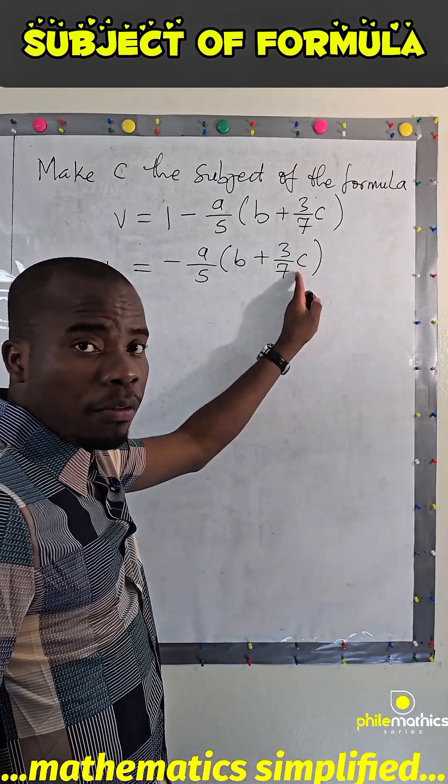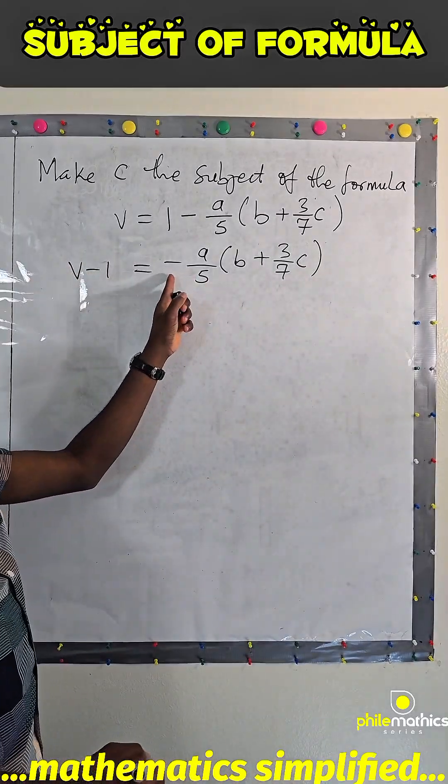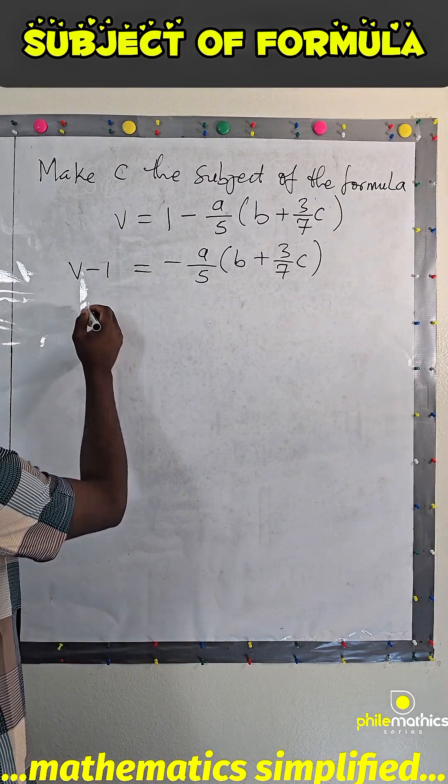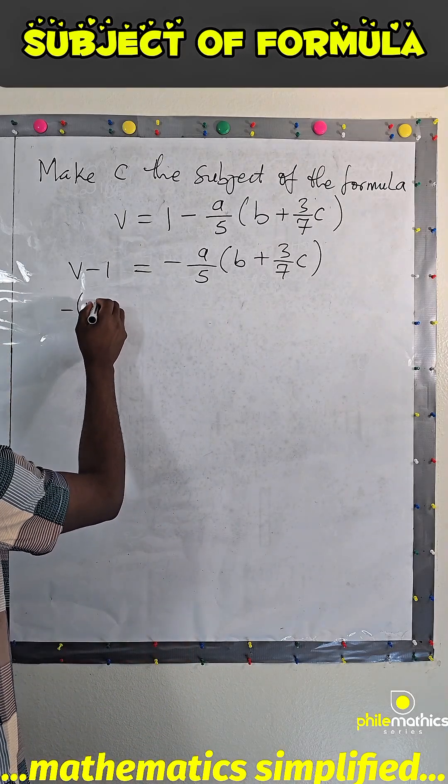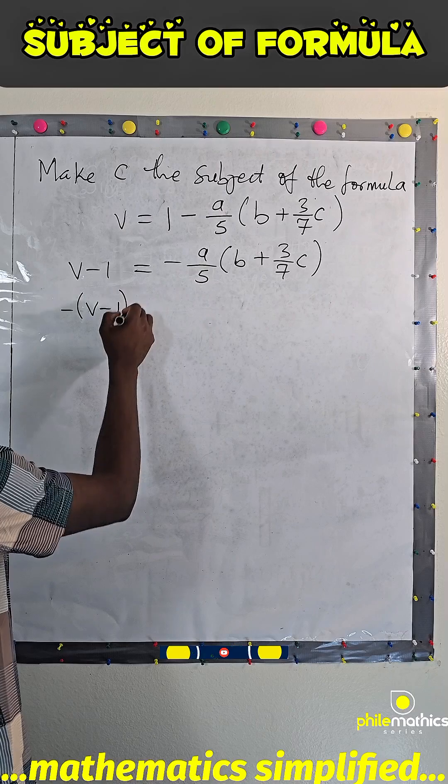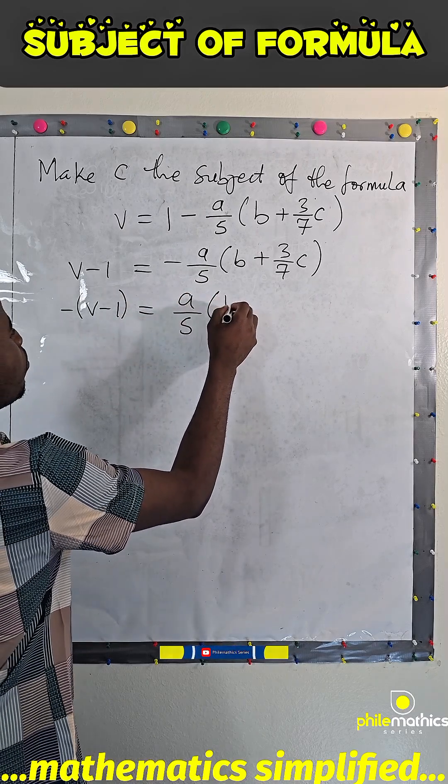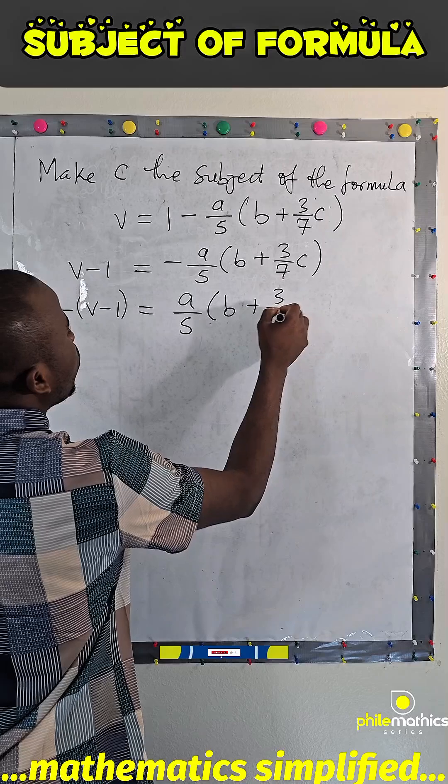This is what we are looking for. So, this minus, I can decide to multiply by minus 1, and if I do that, I will have minus V minus 1 equals A over 5, B plus 3 over 7, C.